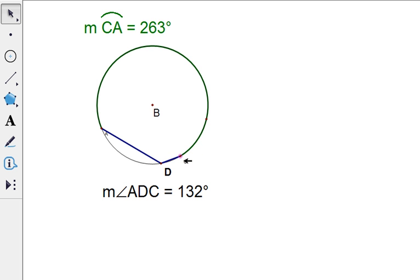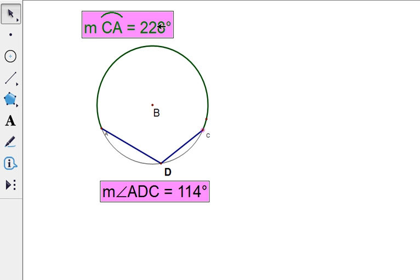Now my hope is you're starting to see that if I were to take the measure of the angle and double it, I'm going to get the measure of its intercepted arc. And vice versa, if I had the measure of the intercepted arc, I could cut it in half and get the measure of the angle. That is the relationship that we're looking for here.